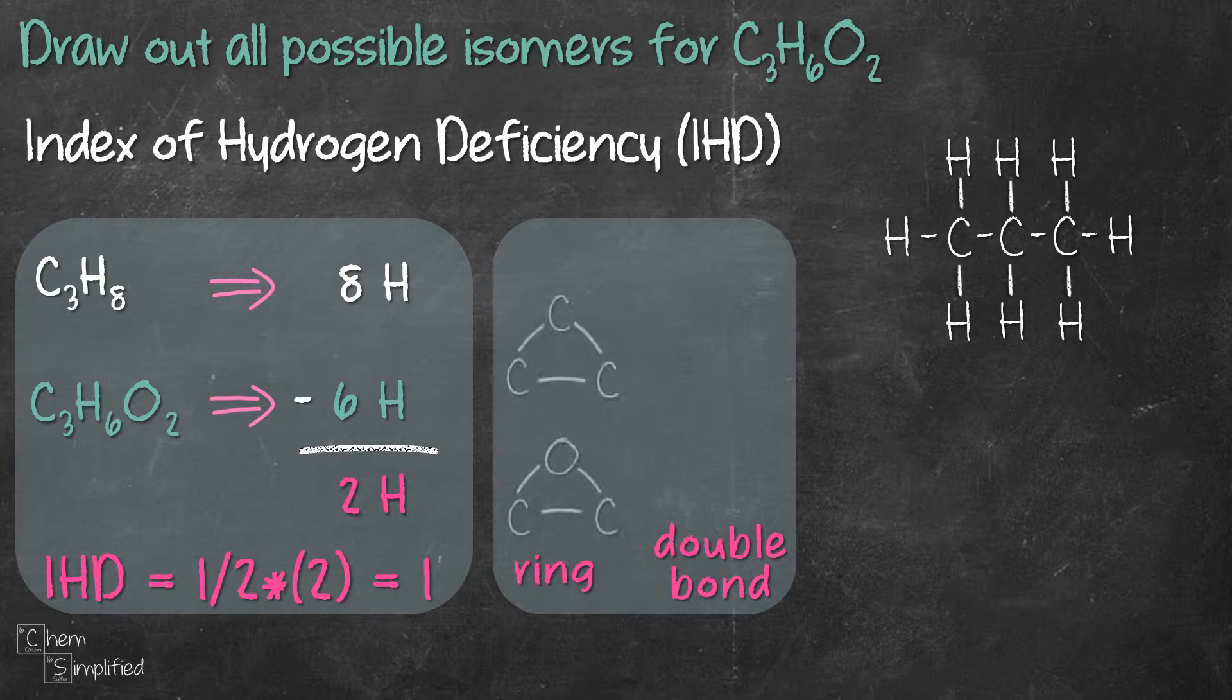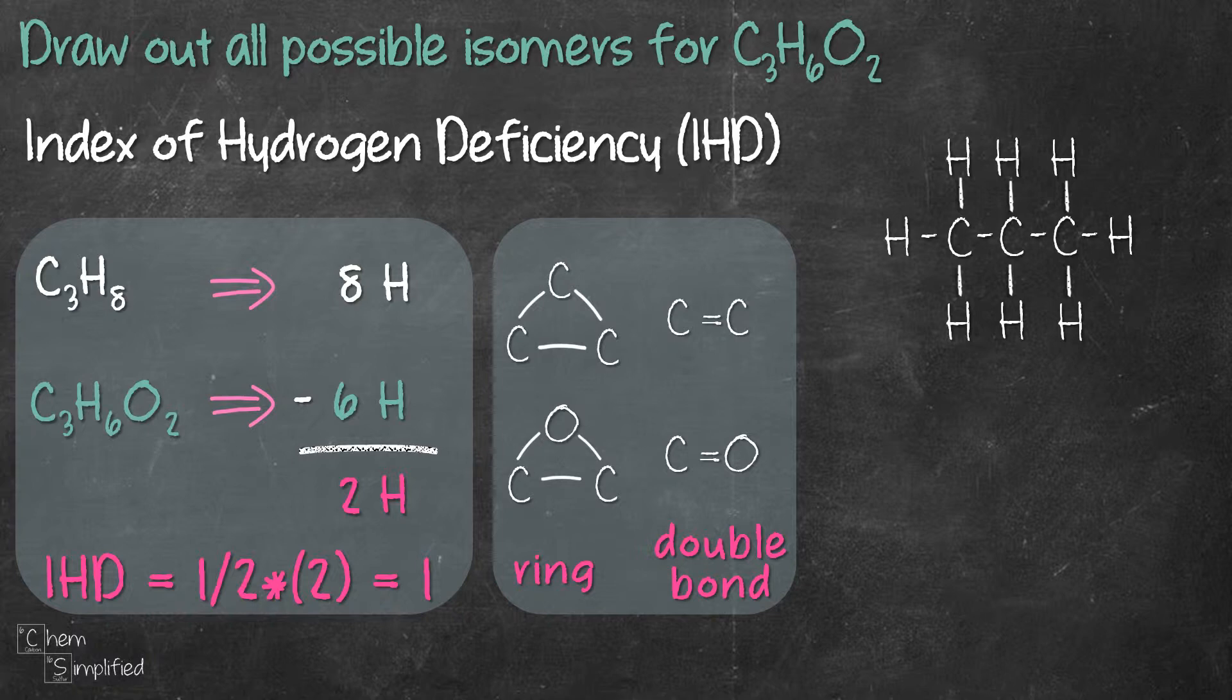It means C3H6O2 has 1 ring or 1 double bond. Rings can be in the form of cyclic compound containing carbons or cyclic compound containing oxygen inside, which in this case we call it cyclic ether. Double bond in this case can happen between two carbons like C double bond C, or it can happen between carbon and oxygen like C double bond O.